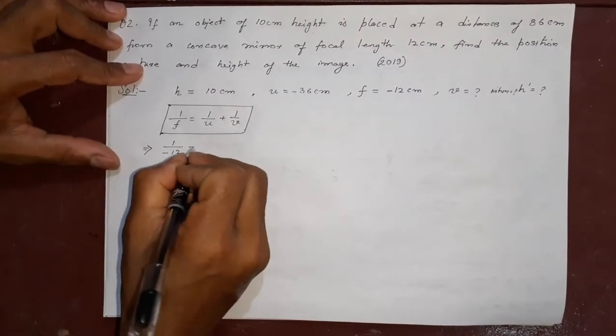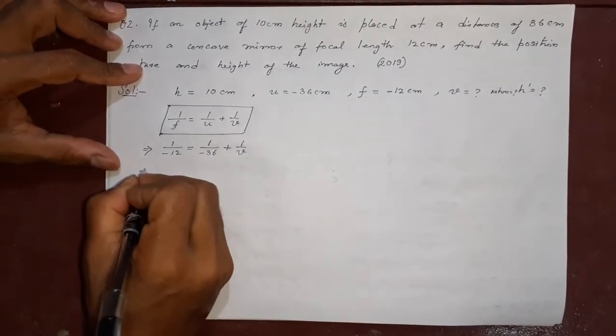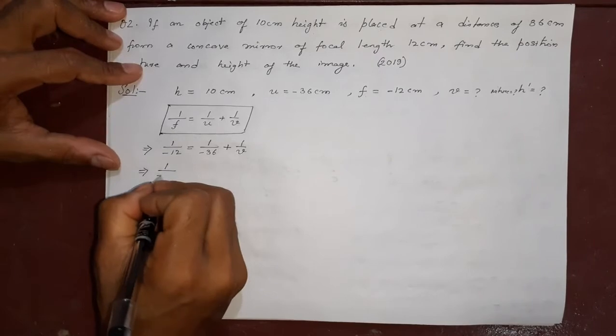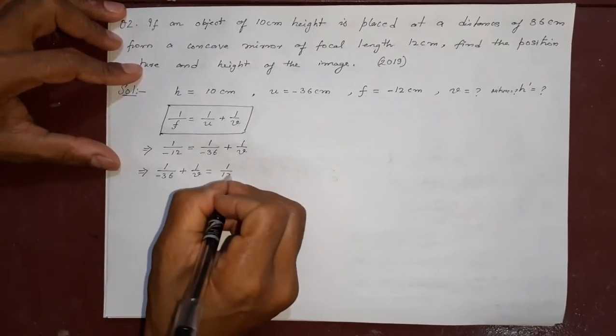1 by minus 12, 1 by minus 36, 1 by v. Write this on the right side, this on the left side.